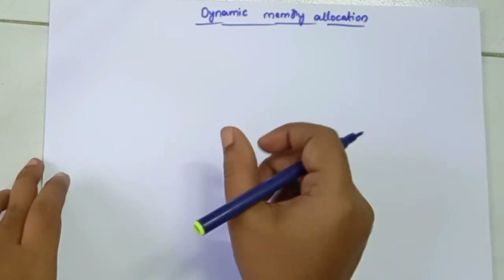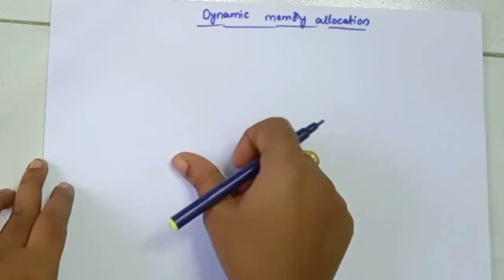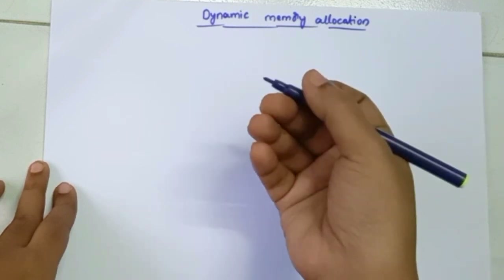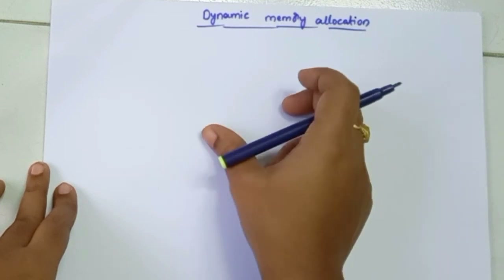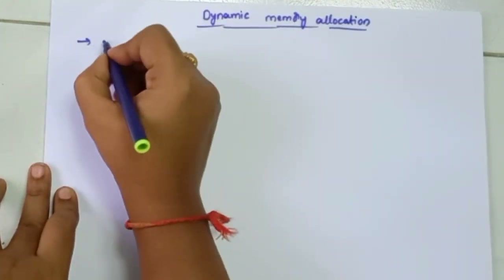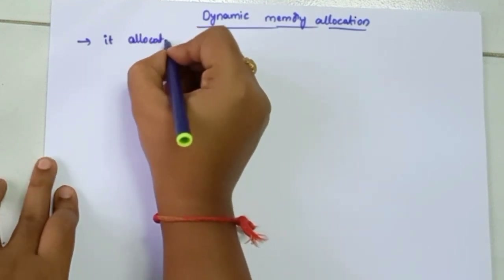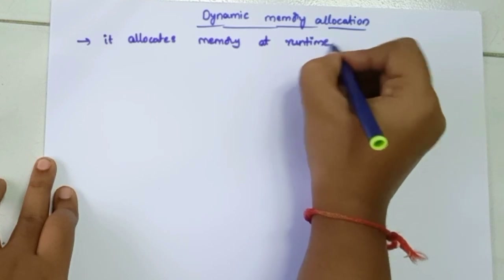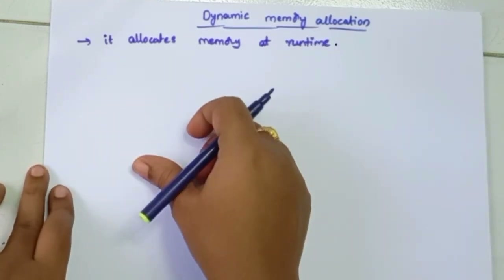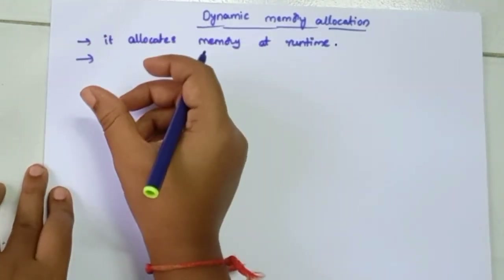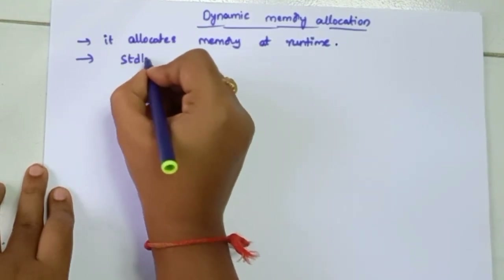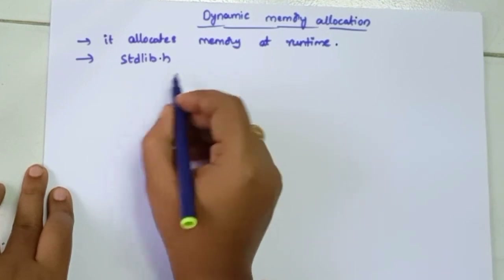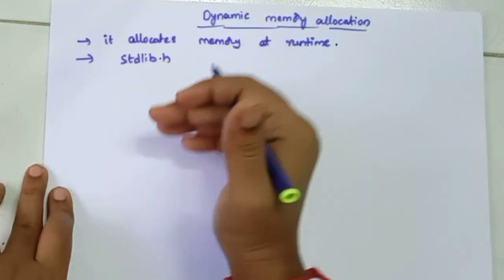Hi friends, so I was doing C language dynamic memory allocation topic. First of all, dynamic memory allocation — what is dynamic? It is a run time concept. The first point is it allocates memory at run time. To access dynamic memory allocation concepts, we use the stdlib.h header file, which is a predefined header file containing the required functions.